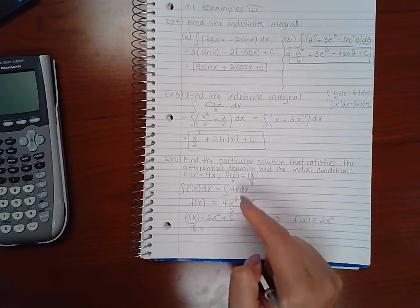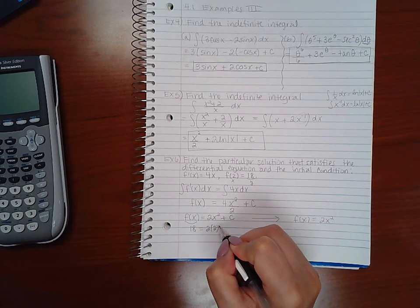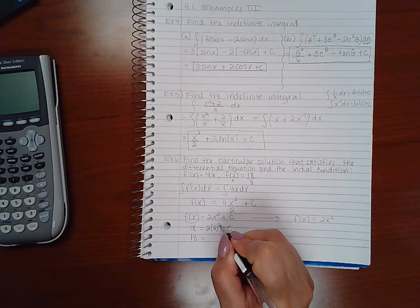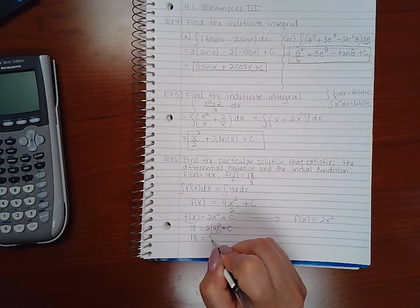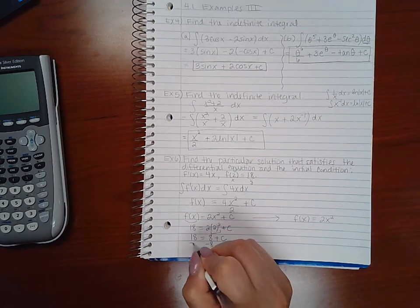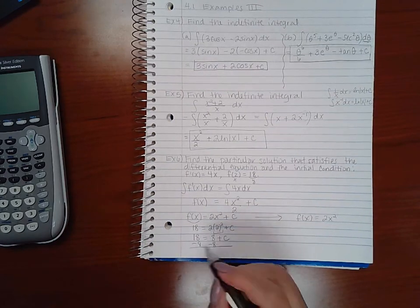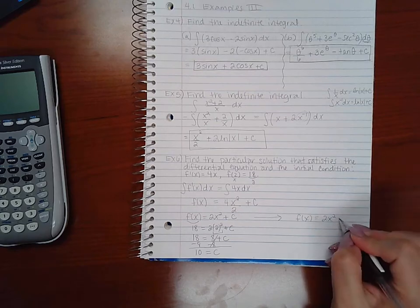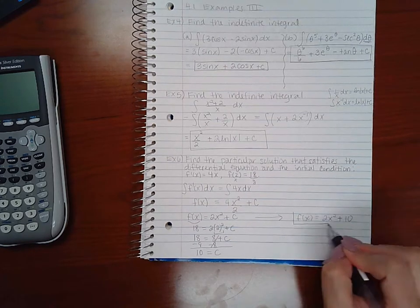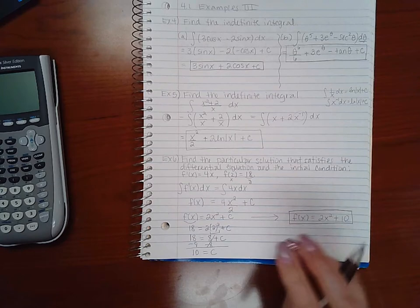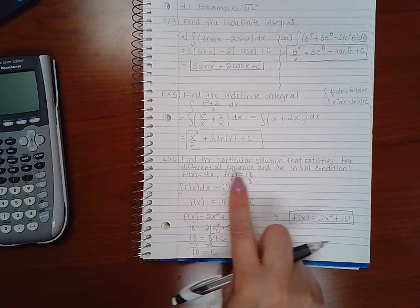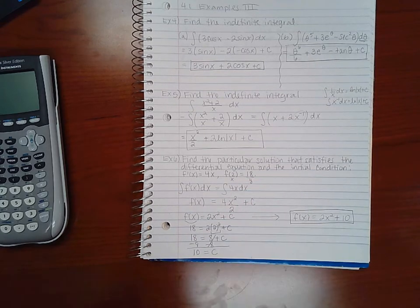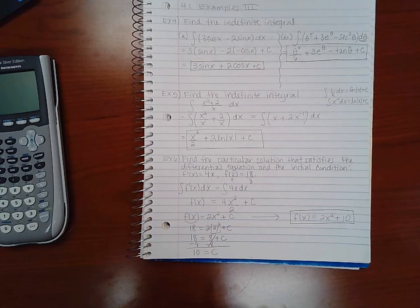So I get 18 equals 2 times 2 is 4, and this 4 times that 2 is 8. And if I minus 8 on both sides, I end up with 10 equaling c. So that means that that constant here should be a positive 10, and this is the particular solution to this differential equation with this information. This and this information is called an initial condition.